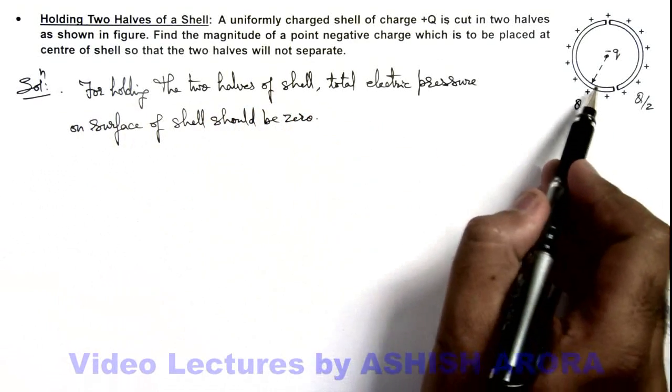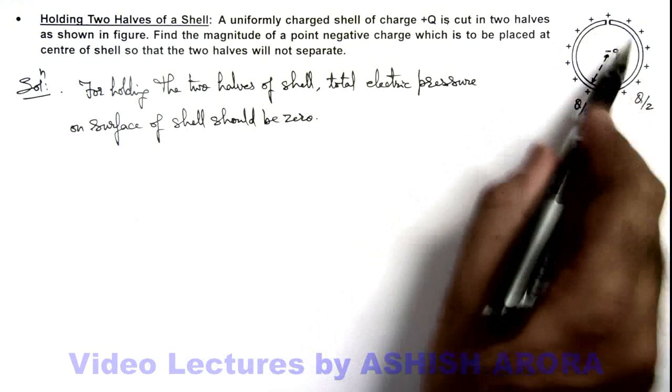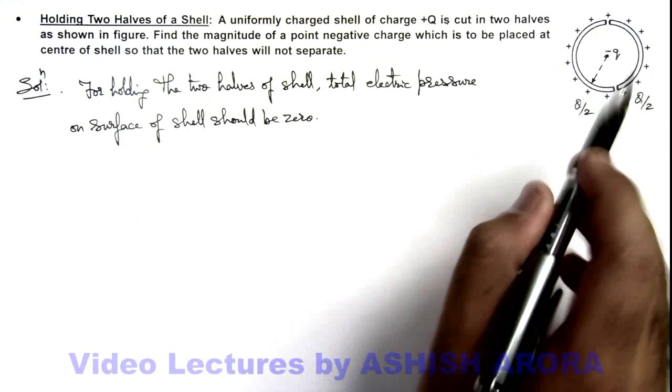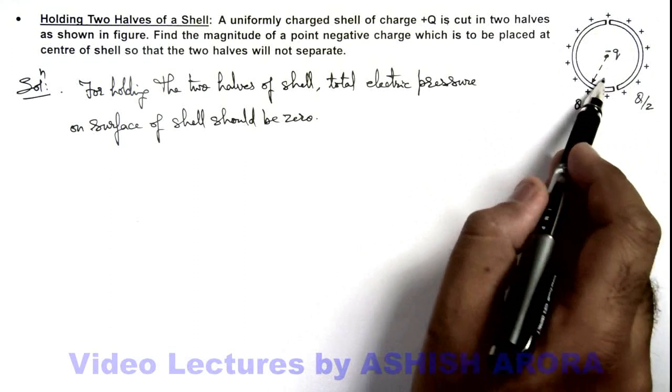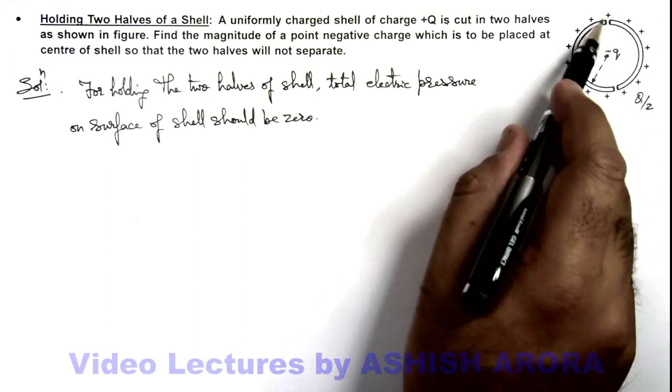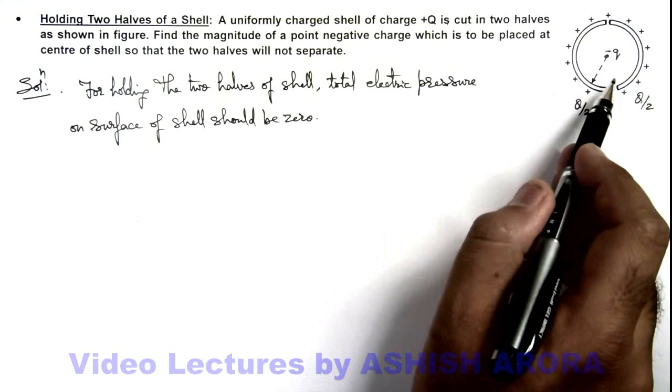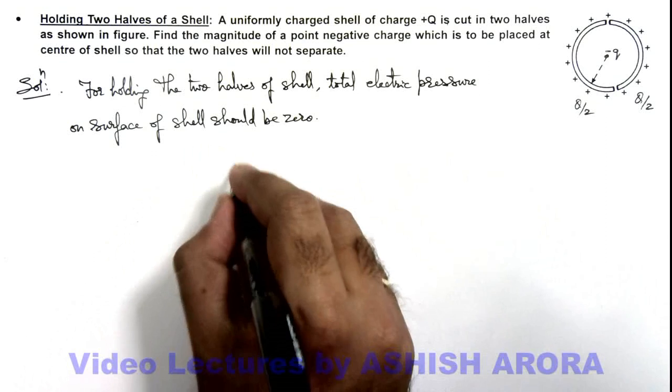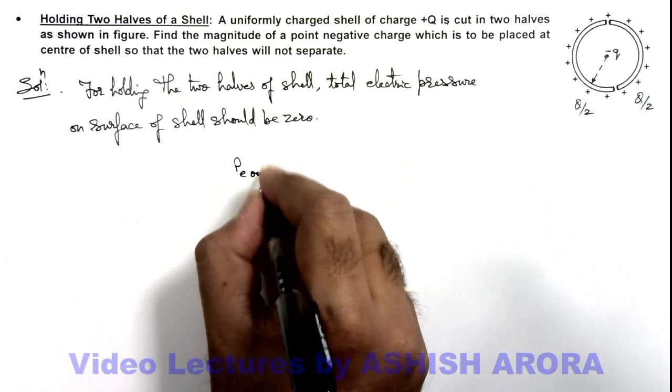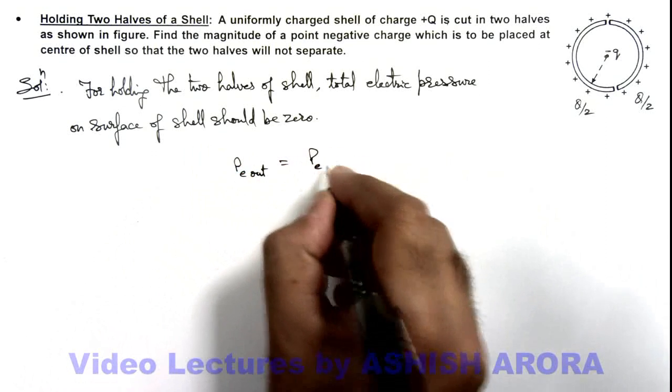Because due to the own charge, the shells are applying an outward electric pressure, and this negative charge placed at center will apply an inward pressure. If the two pressures will balance out, the shells will not experience any force due to which these can be separated. So here we can write, electric pressure outward must be equal to electric pressure inward.